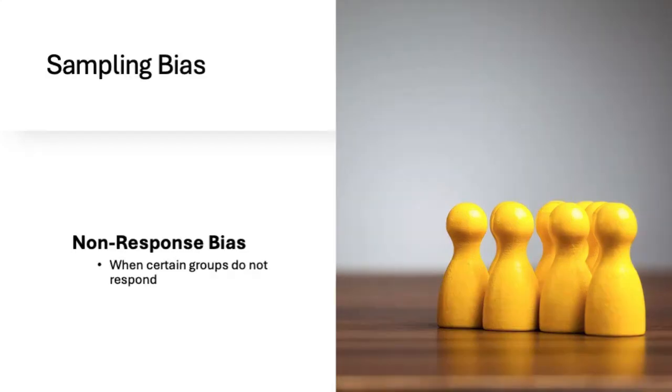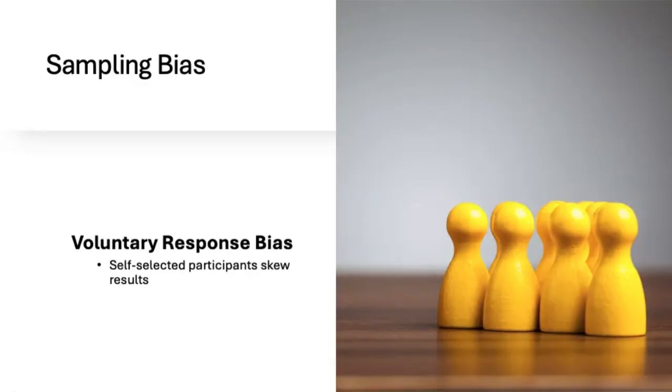There is non-response bias. This is where some individuals have a better chance of being picked than others, whether you realize it or not. For example, if you're doing a study on physical fitness, but only survey people at the gym, you're missing out on individuals who don't work out. So your data would obviously be skewed toward fitter people. Then there's voluntary response bias. And this one happens when certain groups just don't respond. Maybe they're too busy or the survey format doesn't work for them. Maybe if you're doing a survey about depression via email, the people who are most affected may not respond at all. And this affects your results.